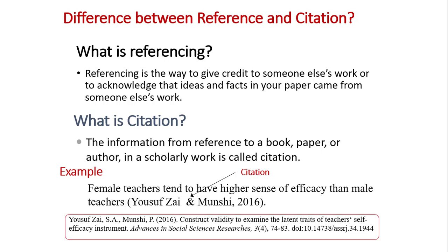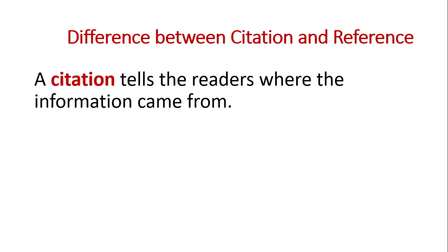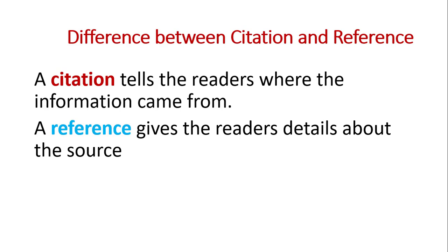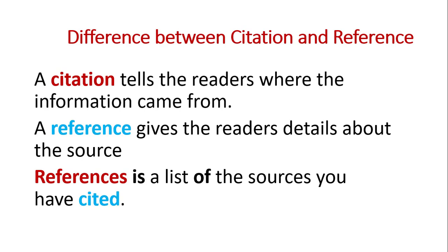So at the end of the document, the complete list of references provides evidence that the author used these sources, so that the reader can further verify or read more about the related sources. In short, a citation tells the reader where the information came from. On the other hand, a reference gives the reader detail about the source so the reader may verify it or read more. Reference is the list of sources you have cited. It is also important that the reference list and in-text citations should be aligned — whatever you used in in-text citation must be provided in the reference list.